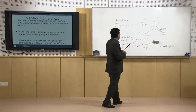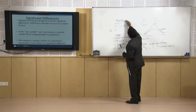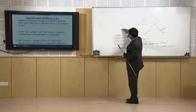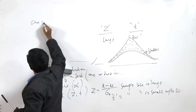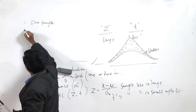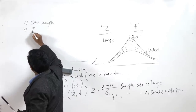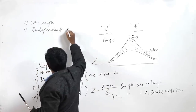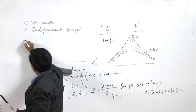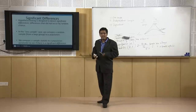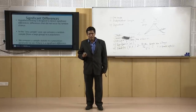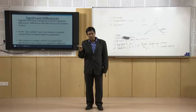The T-test comes in three types: the one-sample T-test, the independent sample T-test (also called the two-sample T-test), and the paired sample T-test.